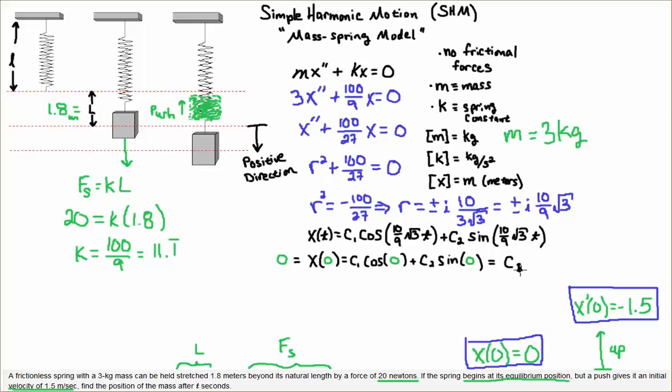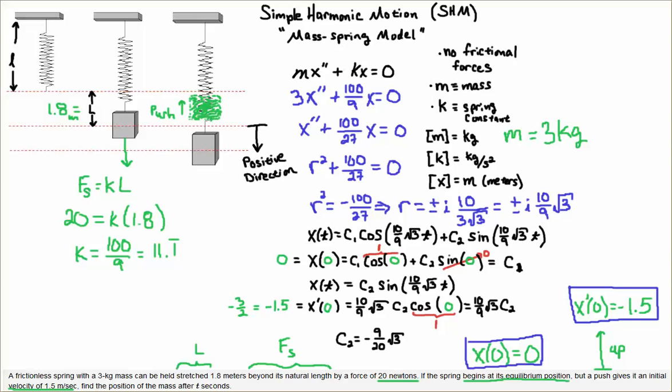Now that C₁ is 0, this term is gone, leaving me with C₂ sine of this argument. Now we apply the initial condition x'(0) equals minus 1.5. If I plug in 0 for cosine we get 1. I'm going to write negative 1.5 as negative 3 halves. A little bit of algebra: since cosine of 0 is 1, we have C₂ times 10/(9√3).